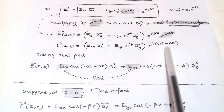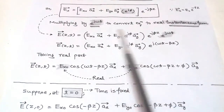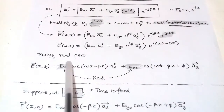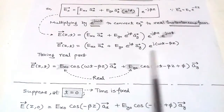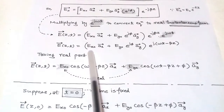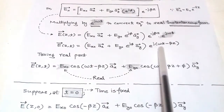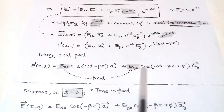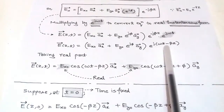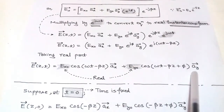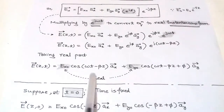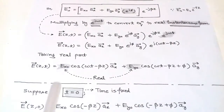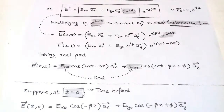After multiplying by e^(jωt), we take the real part to get the real instantaneous form, and we know that the real part is the cosine term. From the X component we get Ex₀ cos(ωt − βz) unit vector X. Similarly, the Y component gives Ey₀ cos(ωt − βz + φ) unit vector Y. This equation is the real instantaneous form of the electric field as a function of position z and time t.